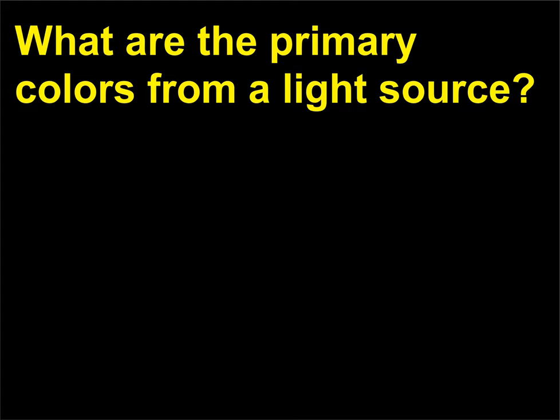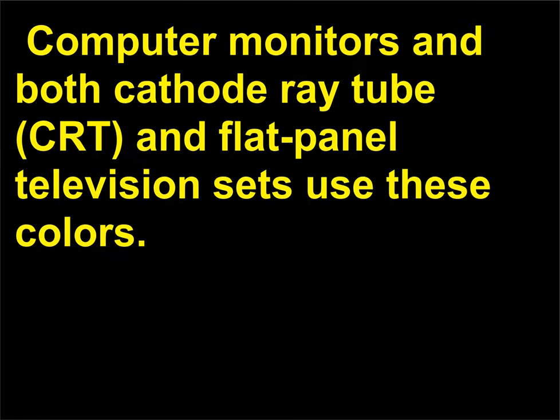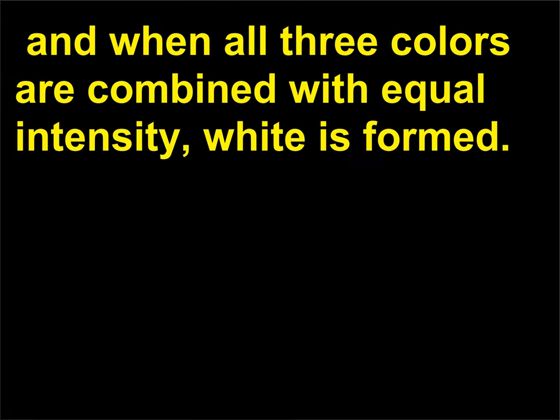What are the primary colors from a light source? When mixing light, or additive color mixing, the three primary colors are blue, green, and red. Computer monitors and both cathode ray tube (CRT) and flat panel television sets use these colors. The combination of these primary colors results in other colors, and when all three colors are combined with equal intensity, white is formed.